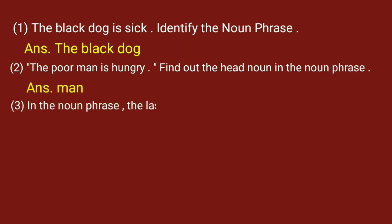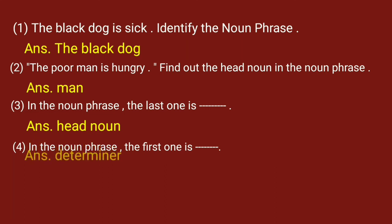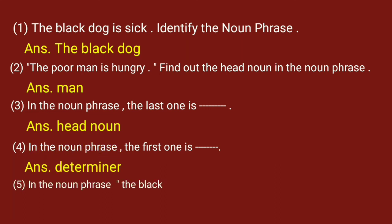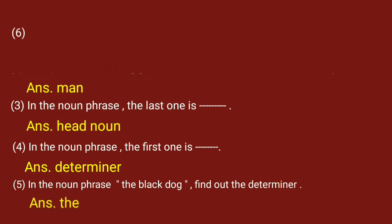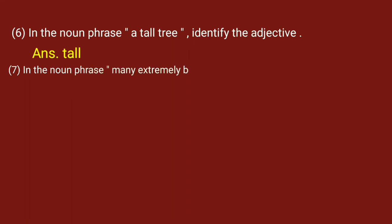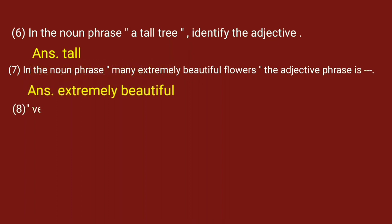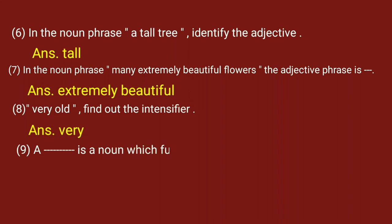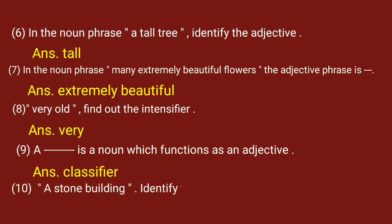In the noun phrase 'the black dog', the determiner is 'the'. In 'a tall tree', identify the adjective: 'tall'. In 'many extremely beautiful flowers', the adjective phrase is 'extremely beautiful'. In 'very old', find out the intensifier: 'very'. In 'a stone building', identify the classifier — 'stone' is a noun which functions as an adjective — that is a classifier.